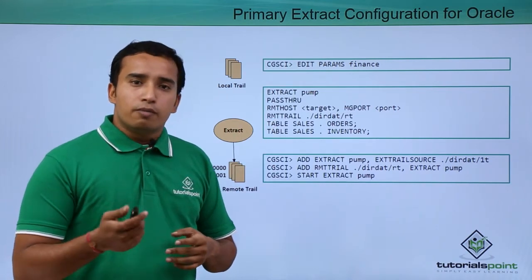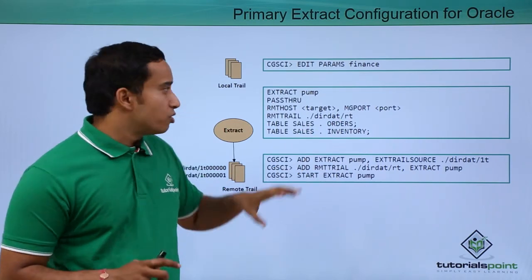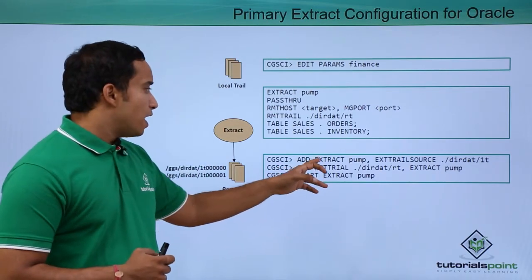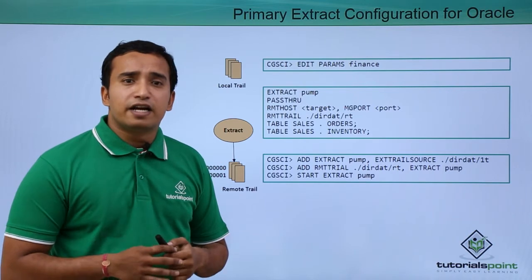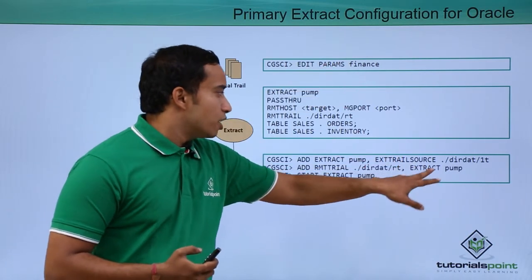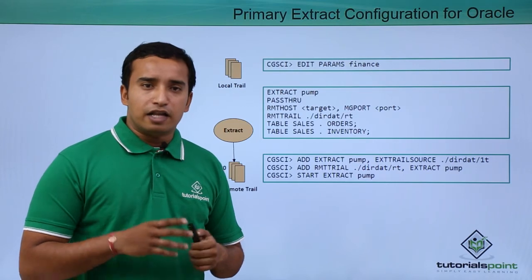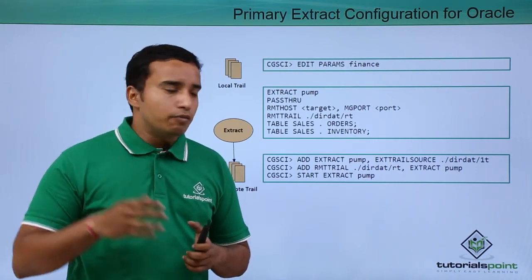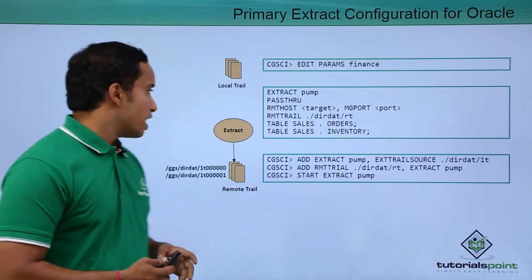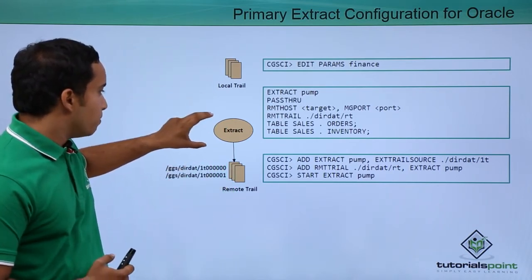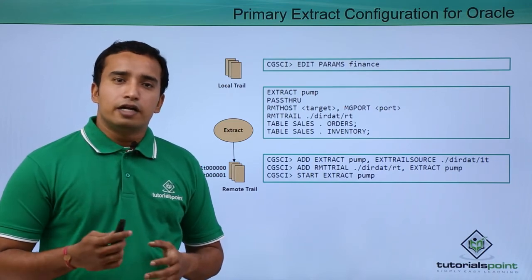Your data pump process reads the trail files from the source and transfers them to the remote server at the specified location. The tables it passes through are the sales, orders, and inventory tables from the sales schema. Once you create this data pump process, you need to register it: 'add extract pump' — where pump is your data pump process. Xtrial source specifies the local trail file created by your primary extract. You also register your remote trail file, indicating where the data pump process will send the trail file on the remote server. Finally, you can start the extract data pump process. As shown in the diagram, the local trail file is read by the data pump process and sent to the remote trail file.